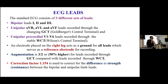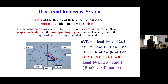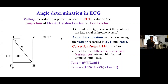The correction factor 1.154 is used to compare the difference in resistance between bipolar and unipolar limb leads. In the X-axis reference system, the relationships already exist: Lead 1 plus Lead 3 equals Lead 2, which is the Einthoven equation. Angular interpretation can be done using the voltage recorded in AVF and Lead 1, where tan alpha equals AVF divided by Lead 1. The correction factor 1.154 accounts for the difference in resistance between bipolar and unipolar limbs.